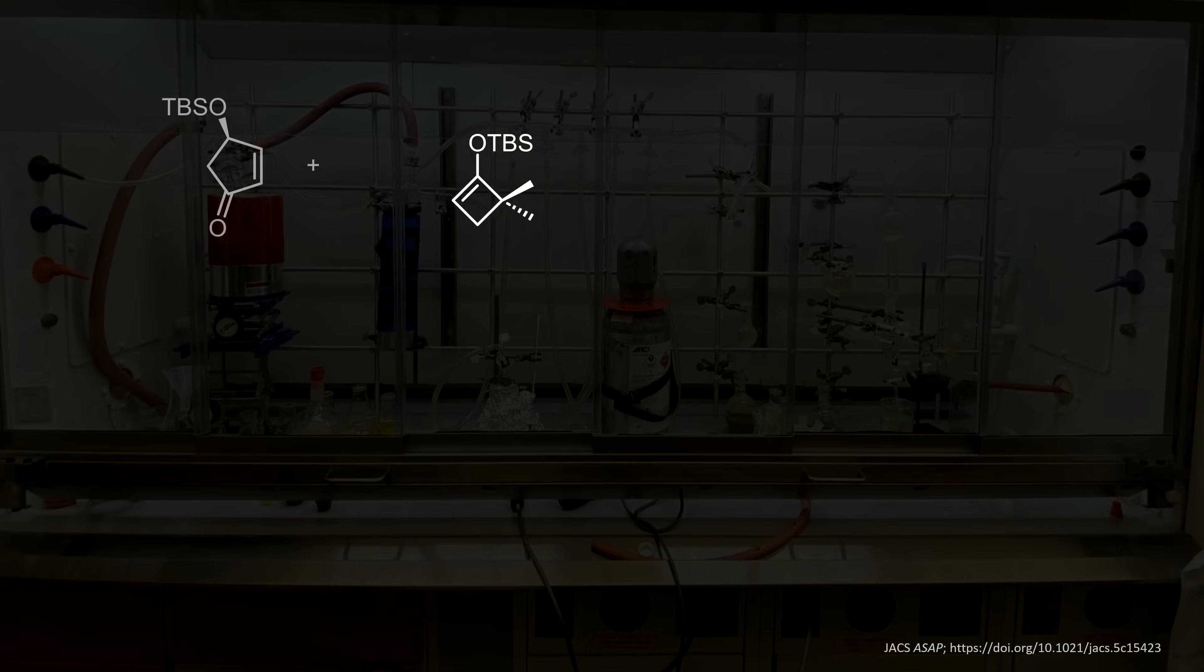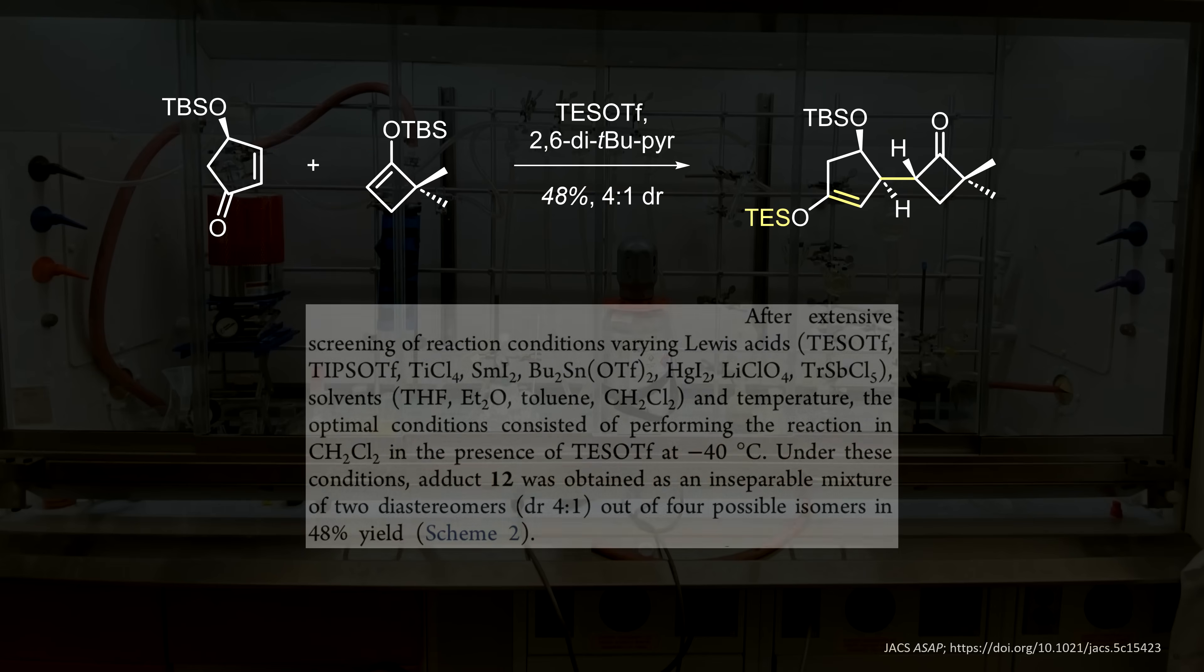This starting material allows for a Mukayama Michael addition, where a silyl triflate activates the enone for nucleophilic addition to connect our rings. The mechanism is obviously not concerted, but I just abbreviated it here. There are two important highlights.